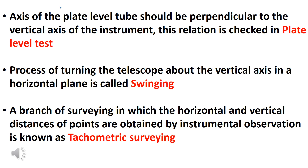A branch of surveying in which the horizontal and vertical distances of points are obtained by instrumental observations is known as tachymetric surveying.